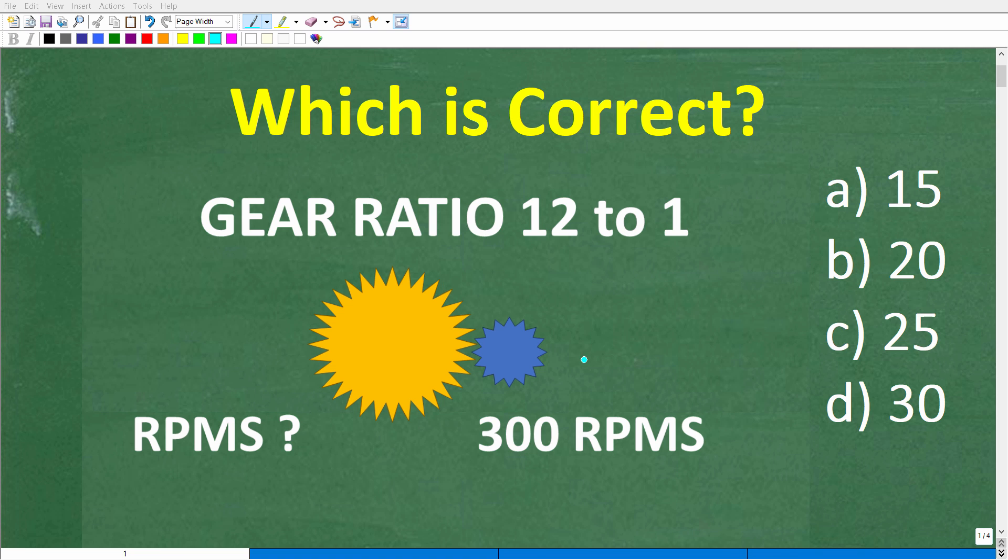If this small gear spins at 300 RPMs - that's revolutions per minute - this small gear will turn 300 times in one minute. This small gear is driving this big gear.